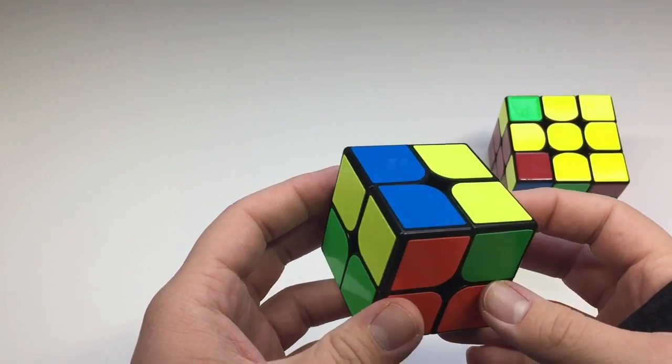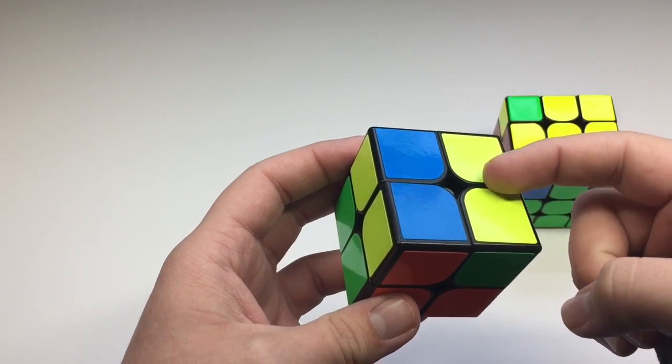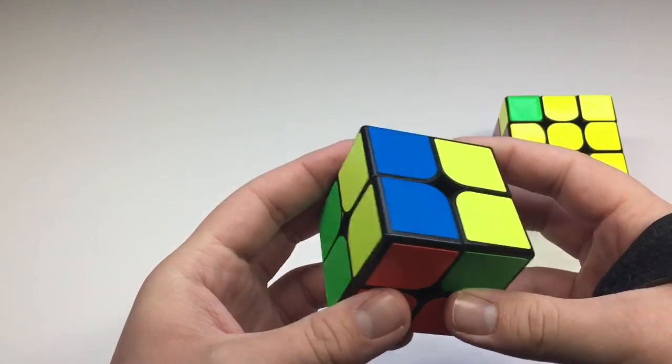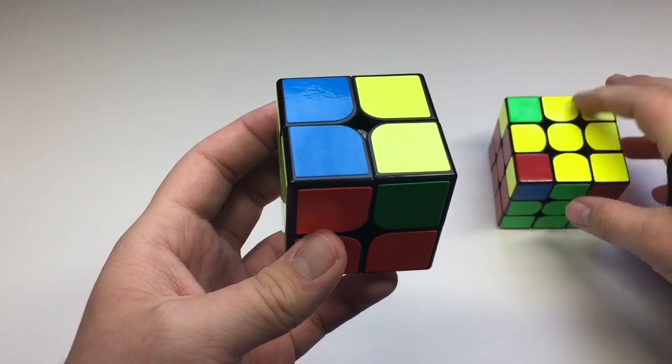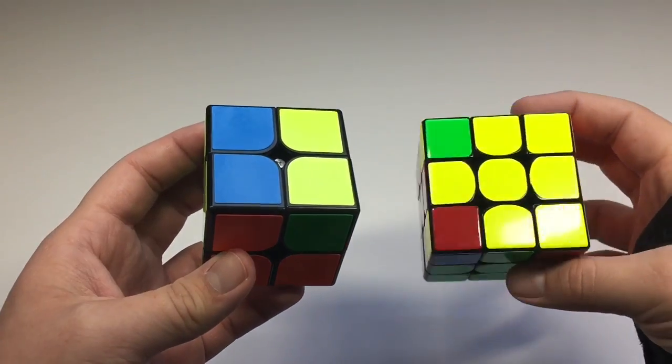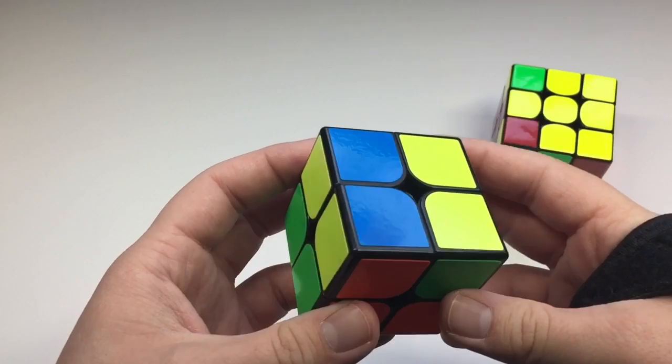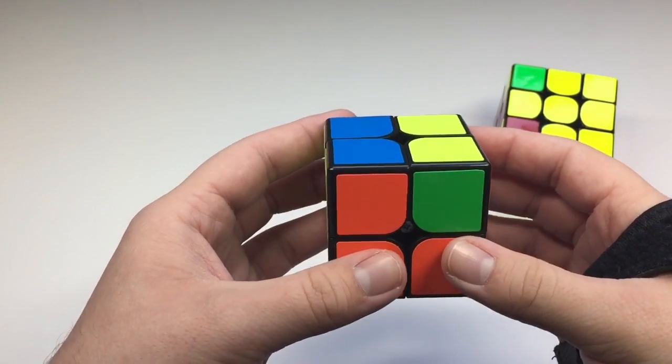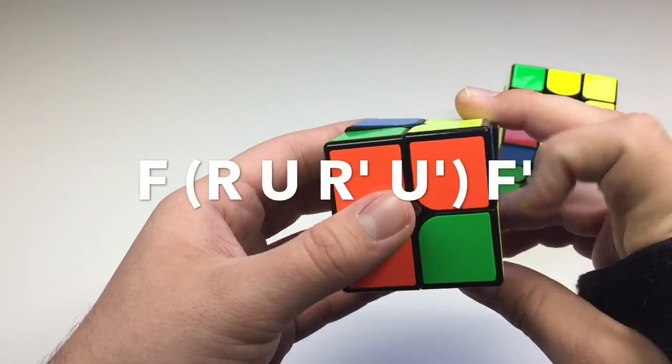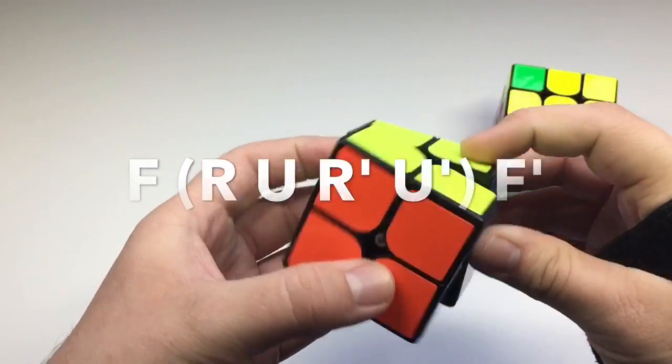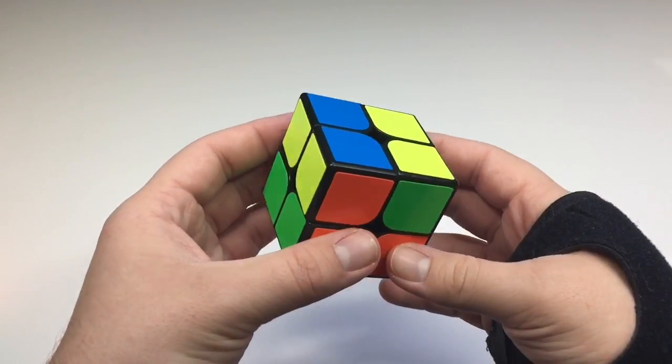The next case looks like this. You have the two here and two here. The closest OLL it would look like would be this one. So you hold it right here and you do this algorithm. And perform fast.